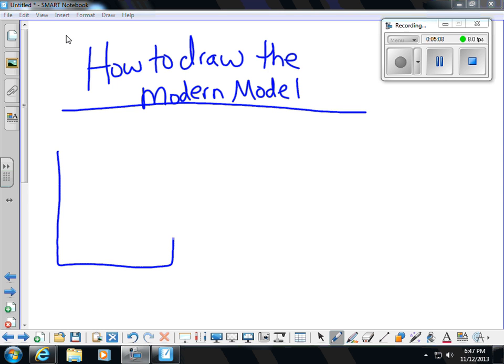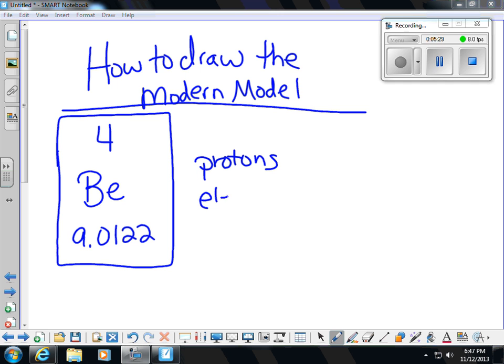This time, we're going to take a look at the data box for the element beryllium, group 2, period 2. It has an atomic number of 4, atomic mass of 9.0122. We're going to figure out how many protons, electrons, and neutrons.